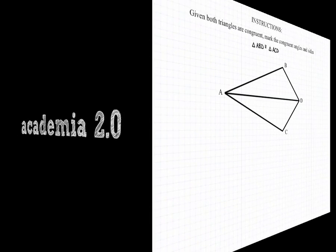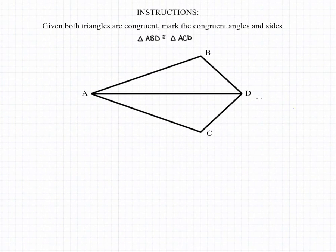To label the triangles, we need to look at the order of the letters in the congruent statement. AB is congruent to AC, BD is congruent to CD, and DA is congruent to DA.